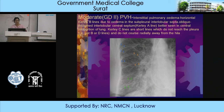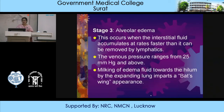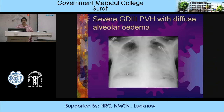The third stage is alveolar edema, where interstitial fluid accumulates at rates faster than it can be removed by lymphatics. This leads to a bat's wing appearance — you can see it appears like the wings of a bat. This is grade 3 PVH with diffuse alveolar edema.